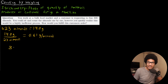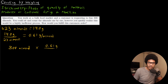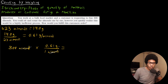Now that you've set up this conversion factor, you can think of this as a conversion problem. If the customer is asking for 800 almonds, you want to know how much 800 almonds weigh. So 800 almonds times 0.61 grams per almond — the units cancel out, almonds cancels with the denominator of our conversion factor — and you get about 488 grams as the weight of 800 almonds.